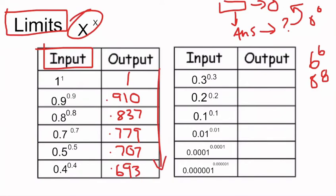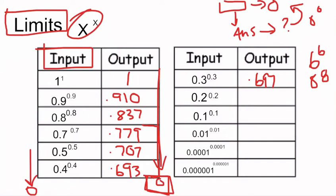Hopefully you'll have noticed a trend — our answers are getting smaller and smaller, approaching zero. If we cut off the data here, we'd say the answer is zero. But our answers are actually slowing down and getting closer together. Then 0.3 to the power of 0.3 is 0.697 — and something strange has happened: instead of continuing to decrease, our data has started to increase, going from 0.693 up to 0.697.